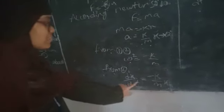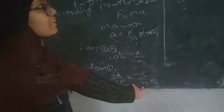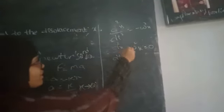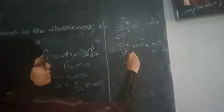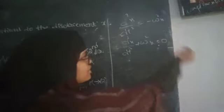The second differentiation gives us minus K by m times X. Since K by m equals omega square, we get d²x/dt² plus omega square X equals zero.